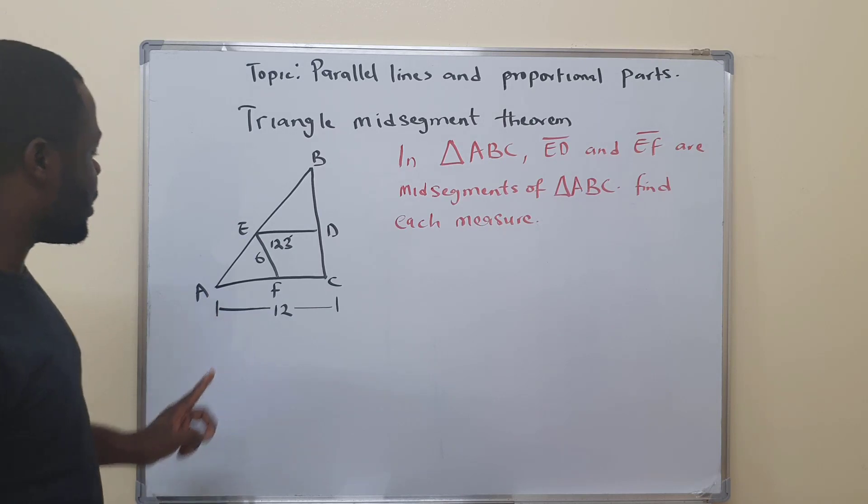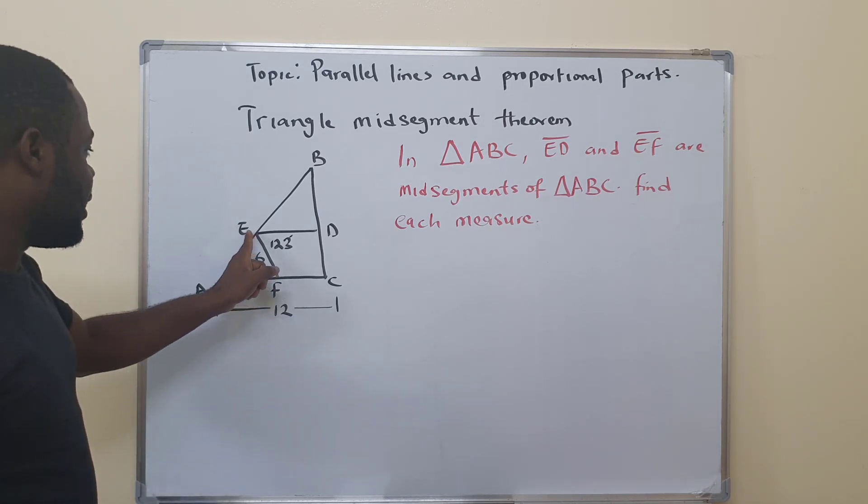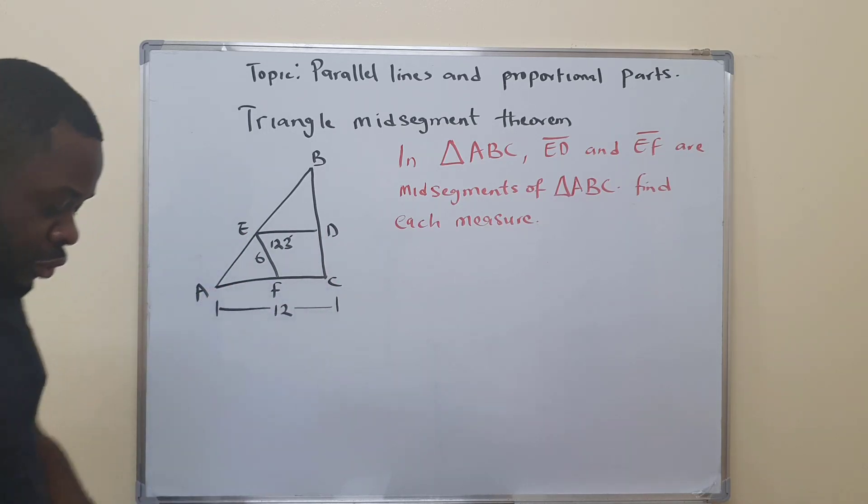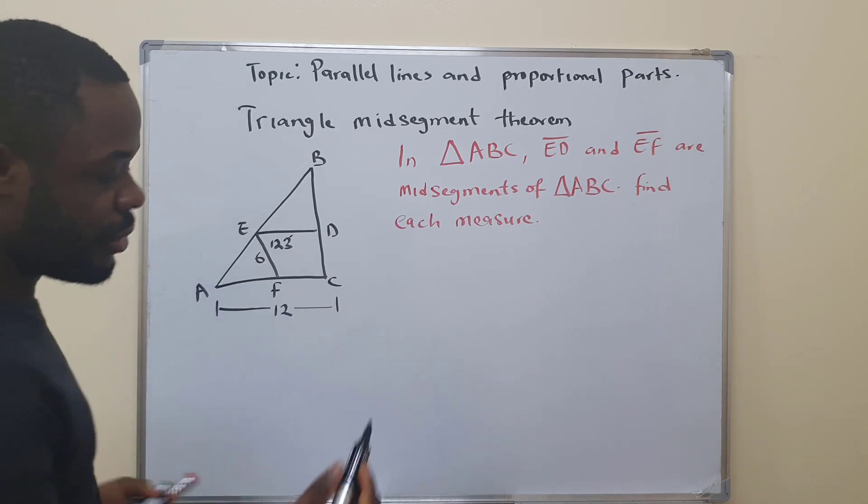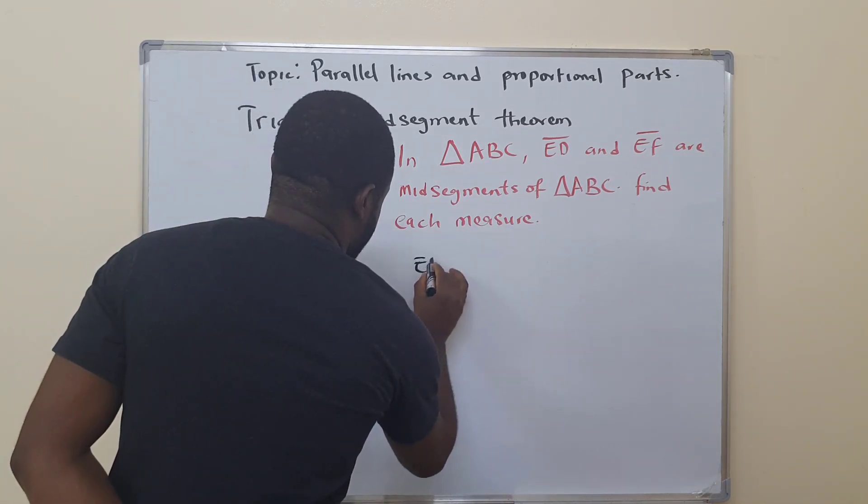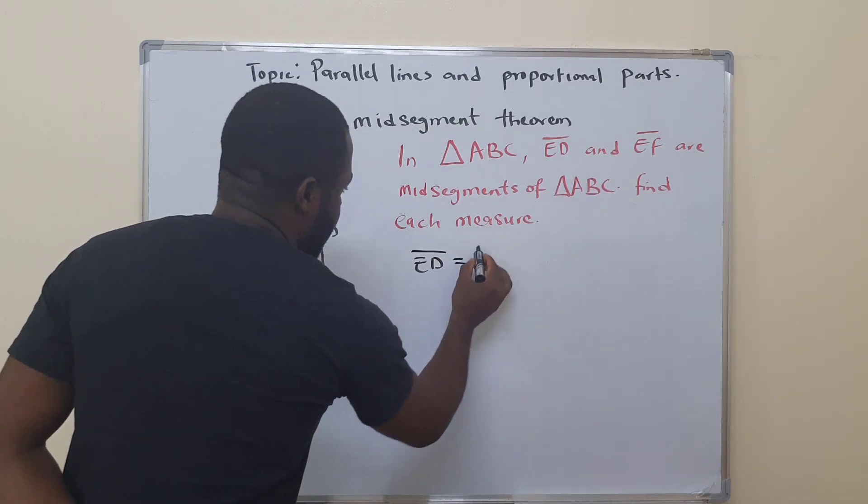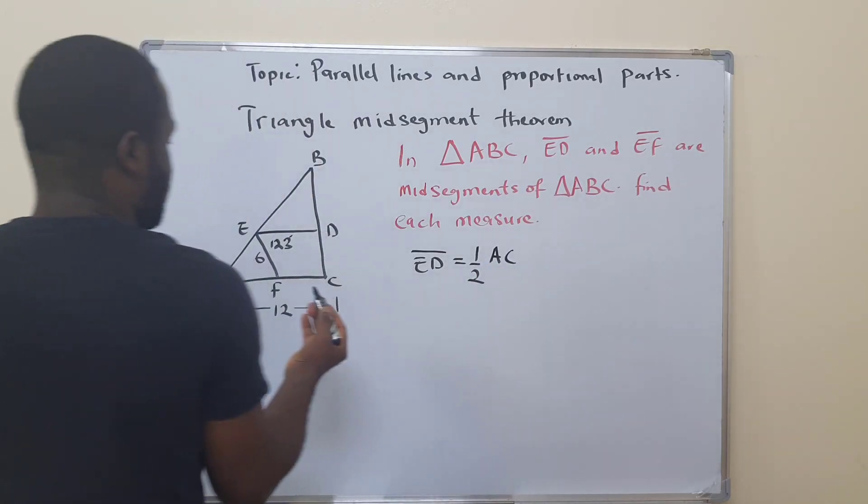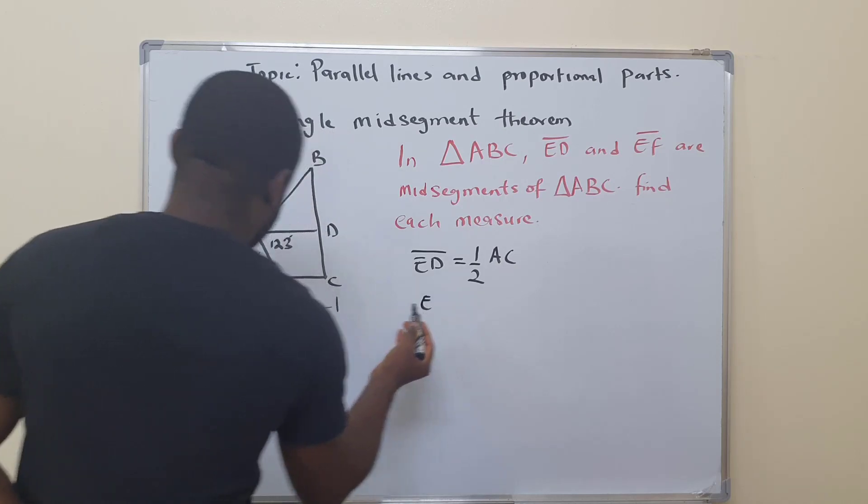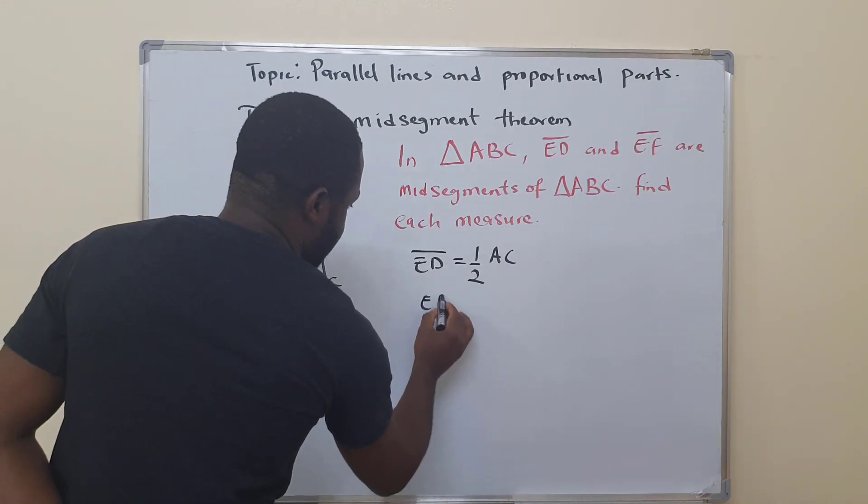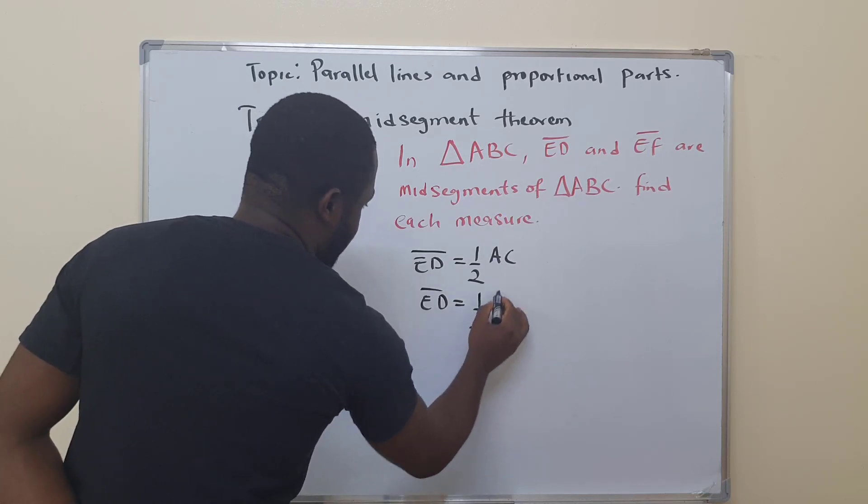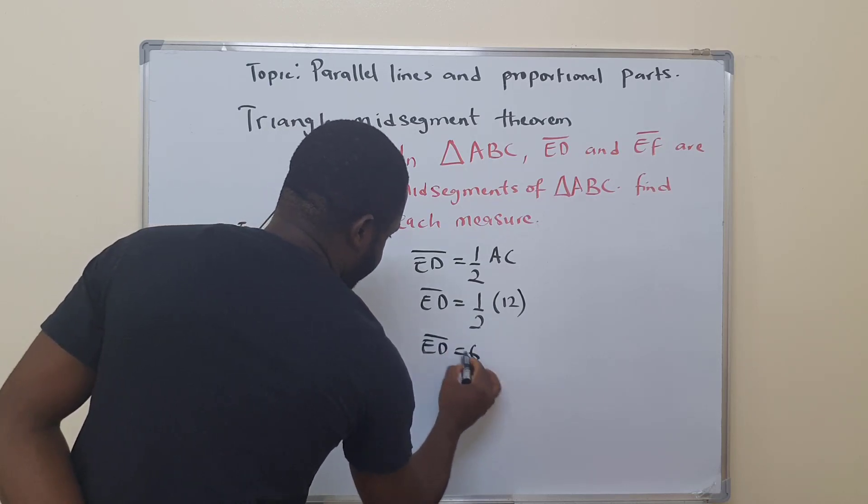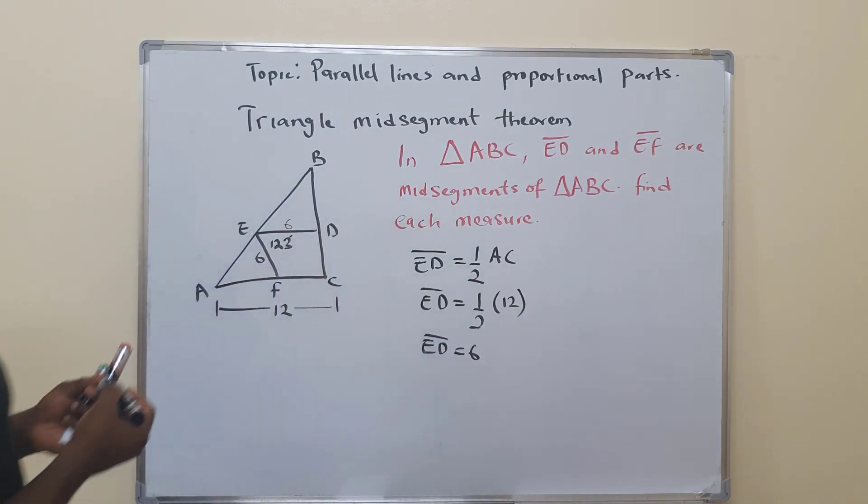The first thing we need to note is that ED is half of AC. Just what we did before with the midsegment theorem. So ED will be half of AC. Here we have ED will be half of 12. So ED equals 6.